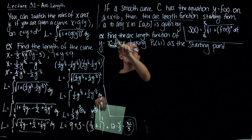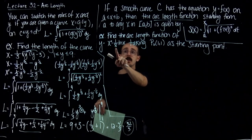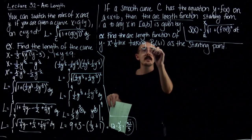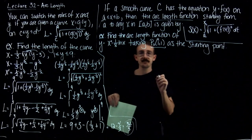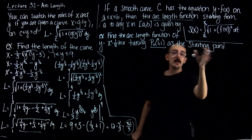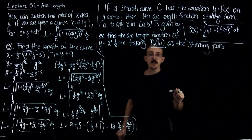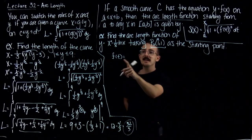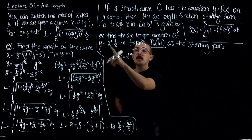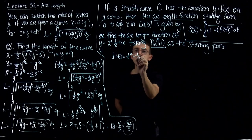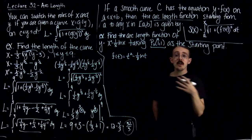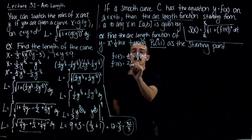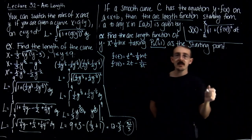Here's an example: find the arc length function for x squared minus 1/8 ln of x. They specify where it starts — that anchor point is x equals 1, so a equals 1. Then x is the variable endpoint. First I write f of t by replacing x with t: f of t equals t squared minus 1/8 ln of t. The formula calls for the derivative of that. The derivative with respect to t is 2t minus 1 over 8t — remember the derivative of ln of t is 1 over t.